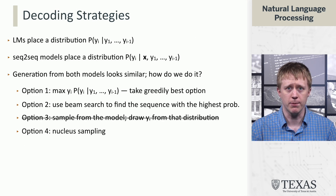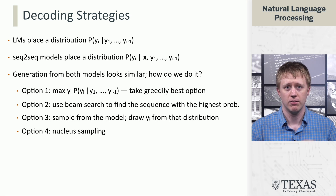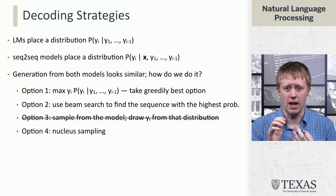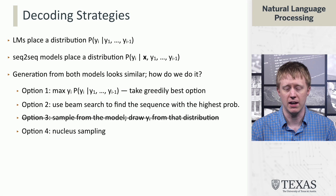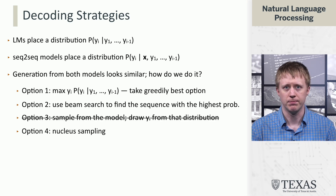So when we talk about decoding strategies from language models, we're often going to think about these three: max decoding or greedy decoding, beam search, and nucleus sampling. And if you use a large language model API like ChatGPT, the outputs very often come from an approach like nucleus sampling.